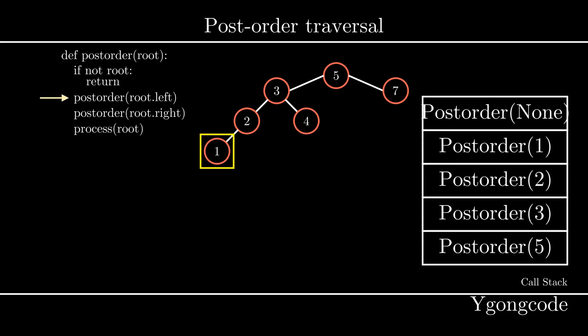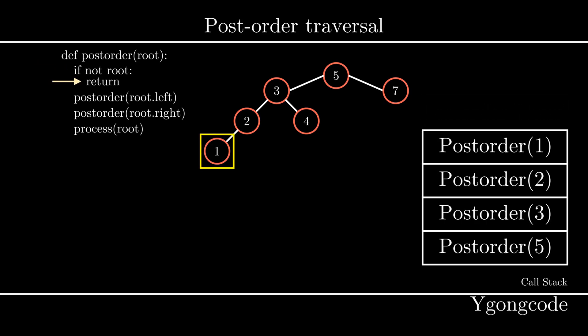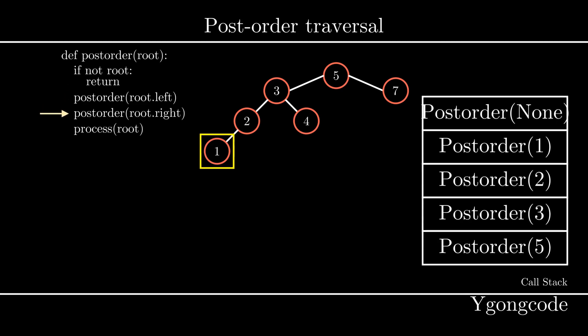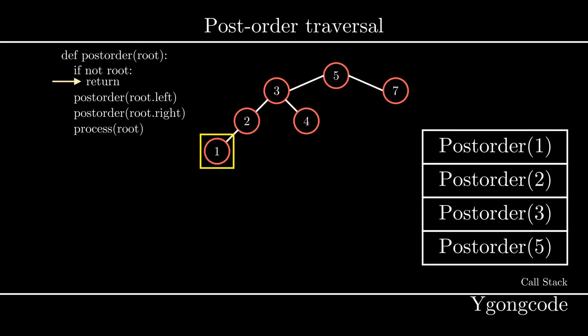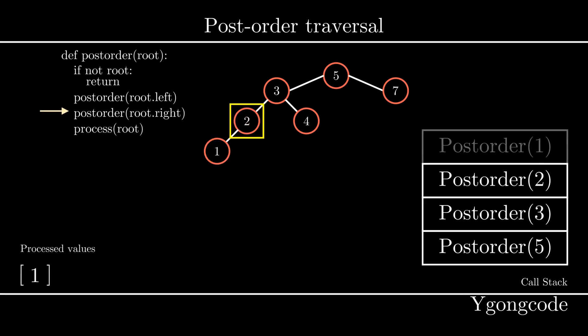At post-order(None), we have reached our base case, so we return and pop post-order(None) off the call stack. Now we're back at post-order(1). Since we just exited its left subtree, we proceed to its right subtree. We push post-order(None) onto the call stack and pop it off since it hits its base case. Now we're done with post-order(1), so we process the value, pop post-order(1) off the stack, and move on to post-order(2).